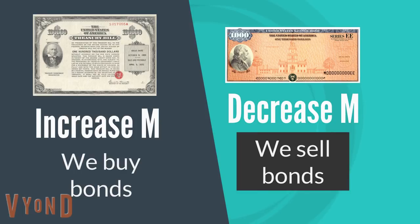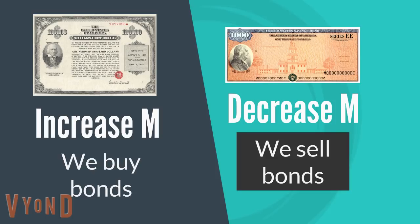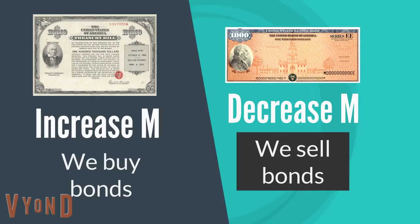The Federal Open Market Committee does its job by buying and selling bonds. If the Federal Reserve wants to increase the money supply, it prints new money, goes to you, and buys your bond — giving you fresh money and increasing the money supply. If it wants to lower the money supply, it sells you a bond with a nice interest rate, takes your money, shreds it, and lowers the money supply. So the Federal Reserve controls the money supply through open market operations.